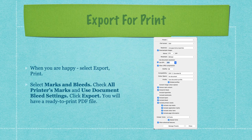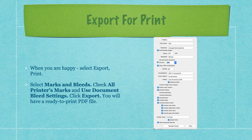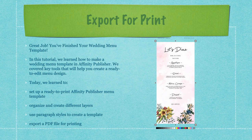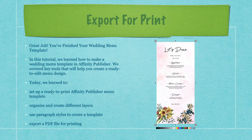Now we're ready to export for print. Take your time setting those styles, particularly if you'll use them repeatedly. When happy, select Export. For print mode, select Marks and Bleeds, check all printer's marks, and use document bleed settings — this is for sending to a print shop. If you're printing on your own printer, you don't need printer marks and bleeds. Click Export and you'll have a print-ready PDF. The finished file will show printer's marks all around it, which is handy even if you're cutting it out at home with a cutting board and sharp knife.